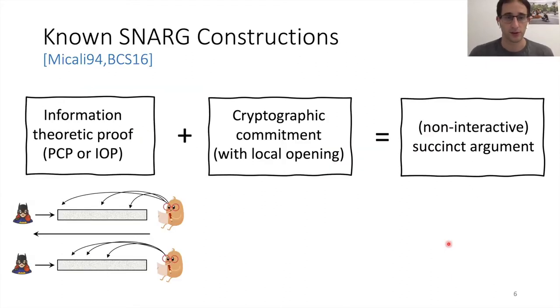So what are these constructions? We have two constructions. We have Micali at '94, and more than 20 years later, BCS, this is Ben-Sasson, Chiesa, Spooner. They both work in the same paradigm. They take an information theoretic proof. This is a PCP or an IOP. And just a short reminder, a PCP is a proof that the prover provides, and the verifier reads only locally, so it reads only a small number of bits from the proof.